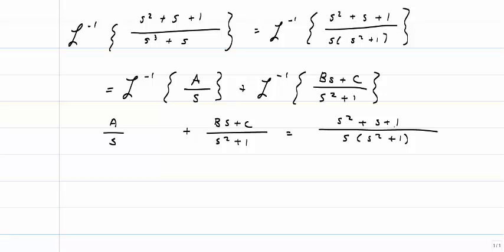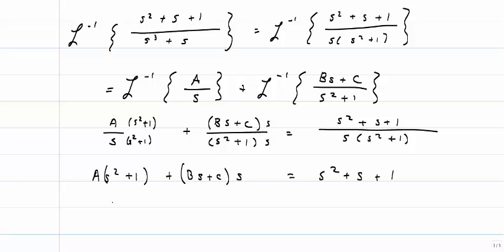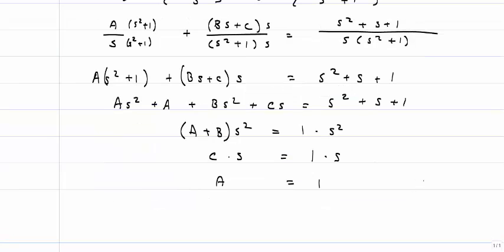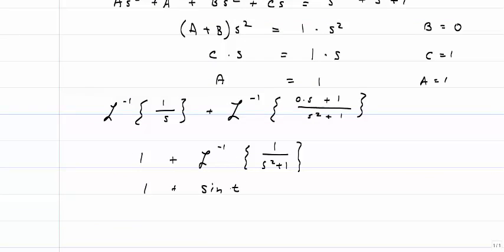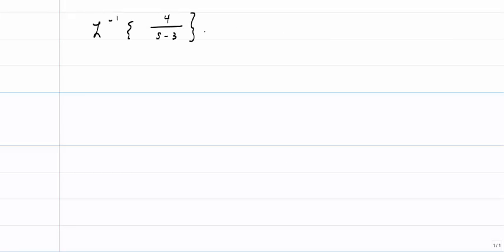To do the partial fractions, multiply the first term by (s² + 1) and the second term by s to get a common denominator. Multiplying out and matching coefficients of terms gives A = 1, C = 1, and B = 0. So the partial fraction decomposition is written accordingly, and finding the inverse Laplace of each term gives 1 plus sine t.